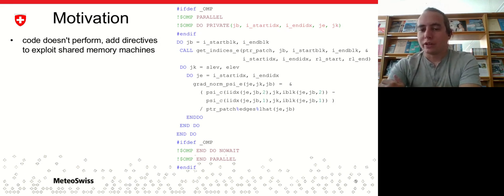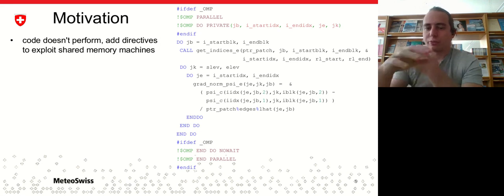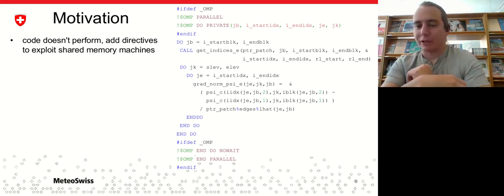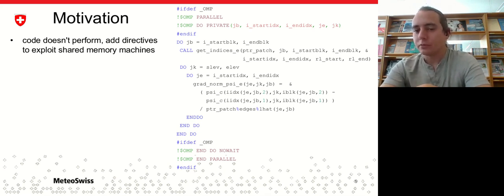Now it turns out that this doesn't perform because so far it just distributed it to all your nodes, but then you do not expose the parallelism of the individual nodes. So you need to add some kind of performance pragmas, for example, in this case, OpenMP. So now you have the science, you have the blocking, and you have your OpenMP code.